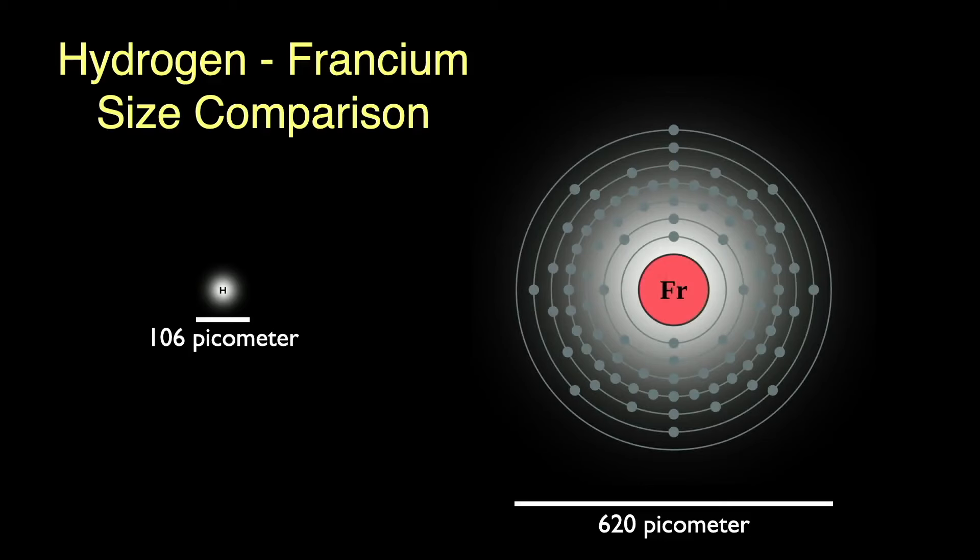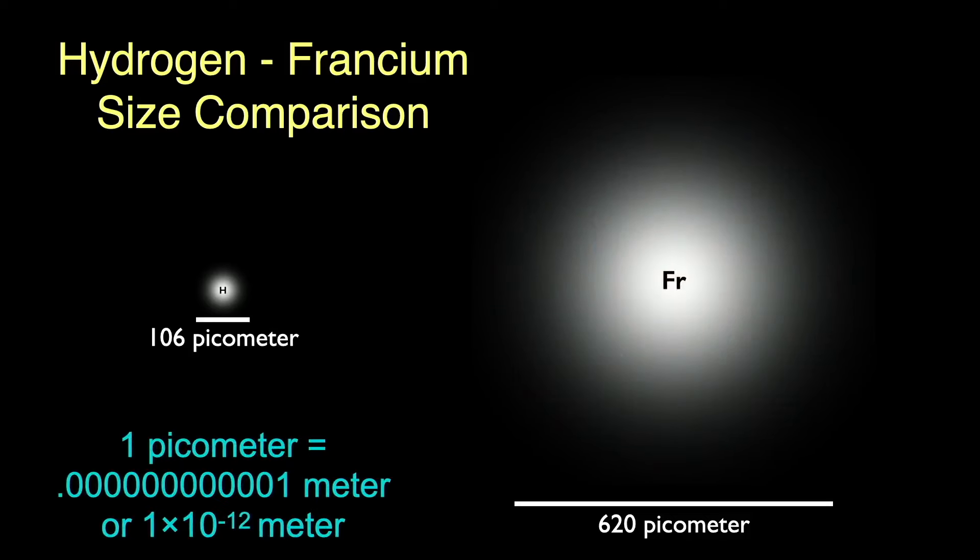Here's its electron structure. See the extra valence electron? This flapping out in the breeze electron is what makes all the alkali metals so reactive. By the way, a picometer is a trillionth of a meter. Atoms are stupefyingly small.